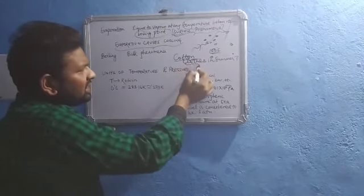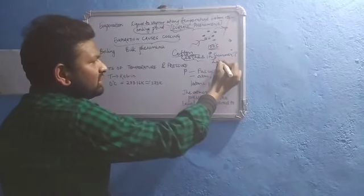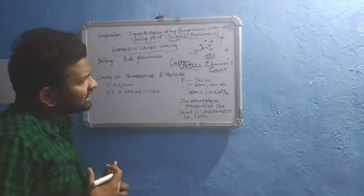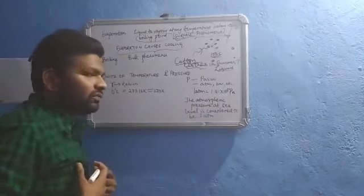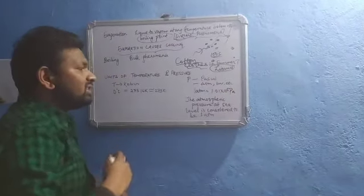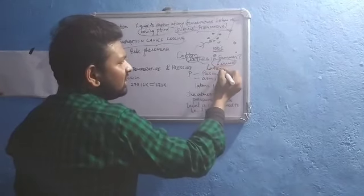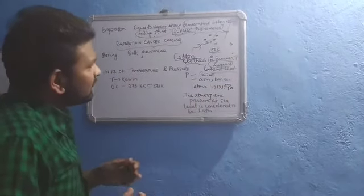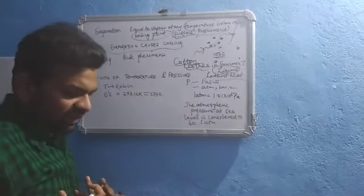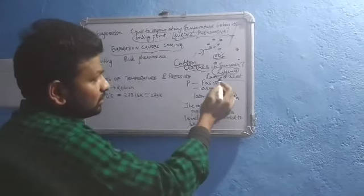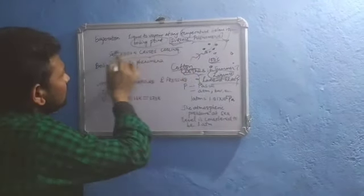What happens is these cotton clothes absorb the sweat from your body. The sweat is in liquid state. This liquid is then evaporated — it is vaporized. Some amount of heat is extracted from our body so that this liquid gets vaporized. That amount of heat is called latent heat — the amount of heat required to change the state. The latent heat of vaporization is absorbed from your body so that the sweat gets vaporized and you feel cool.